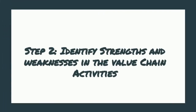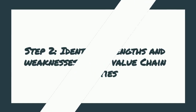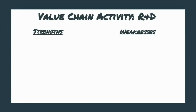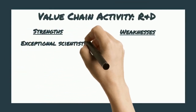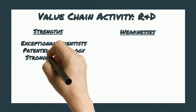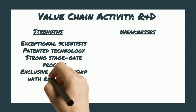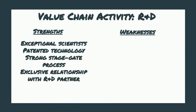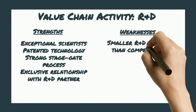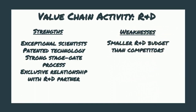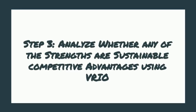Once you've identified your value chain activities, it's time for step two: to identify the strengths and weaknesses in the value chain activities. For example, starting with R&D, our strengths might include our exceptional scientists, our patented technology, our strong stage gate process, and our exclusive relationship with our R&D partner. A weakness might be that we have a smaller R&D budget than our competitors. Now it's time for step three, where we analyze whether any of our strengths are sustainable competitive advantages using the VRIO framework.